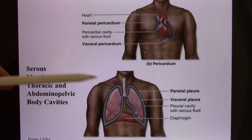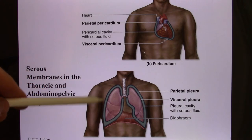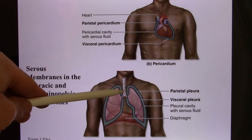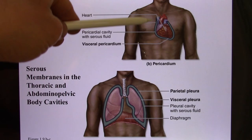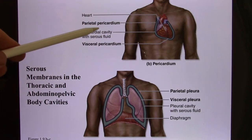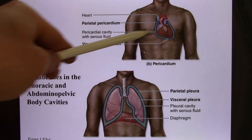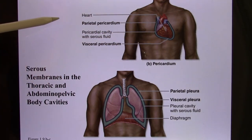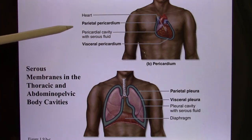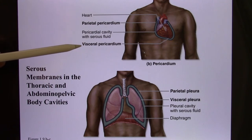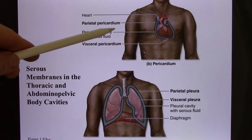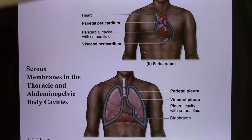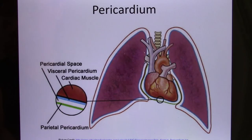So the pleural cavity is a double membrane. You have two lungs, so you have two pleural cavities. Now let's look at the pericardial — you only have one heart, so you only have one pericardial cavity, but still two layers. The one touching the heart is called the visceral pericardium, and the one touching the outside is called the parietal pericardium. Still a double membrane, a serous membrane cavity.